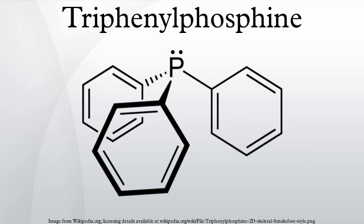Triphenylphosphine abstracts sulfur from polysulfide compounds, episulfides, and elemental sulfur. Simple organosulfur compounds such as thiols and thioethers are unreactive, however. The phosphorus-containing product is triphenylphosphine sulfide, Ph3PS. This reaction can be employed to assay the labile sulfur content of a sample, such as vulcanized rubber.